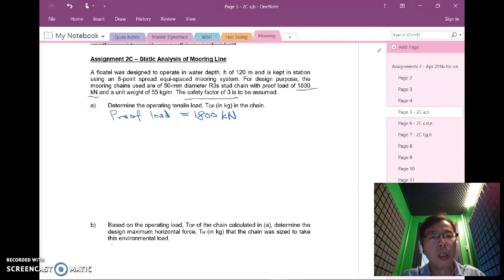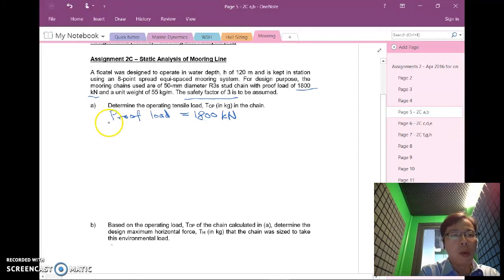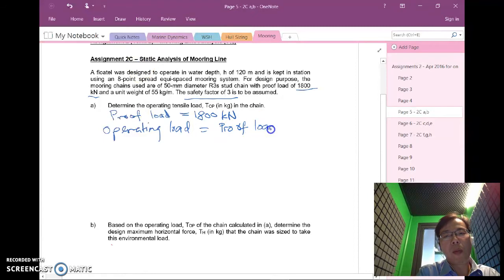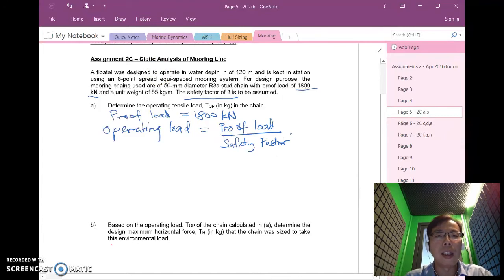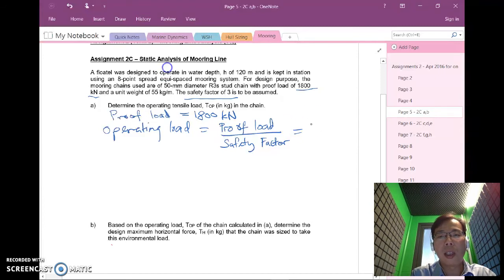Let's continue, a safety factor of three as underlined. Now we want to look at the operating load. The operating load essentially is my proof load divided by my safety factor so my operating load should be less than the proof load or the safe working load, because beyond 1800 the chain would undergo plastic deformation.